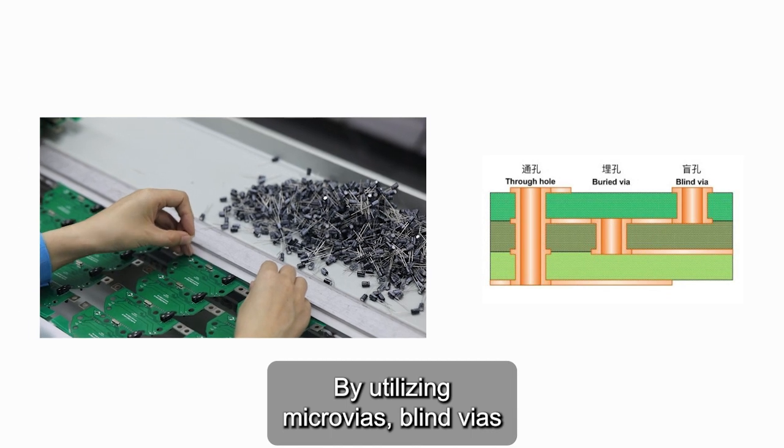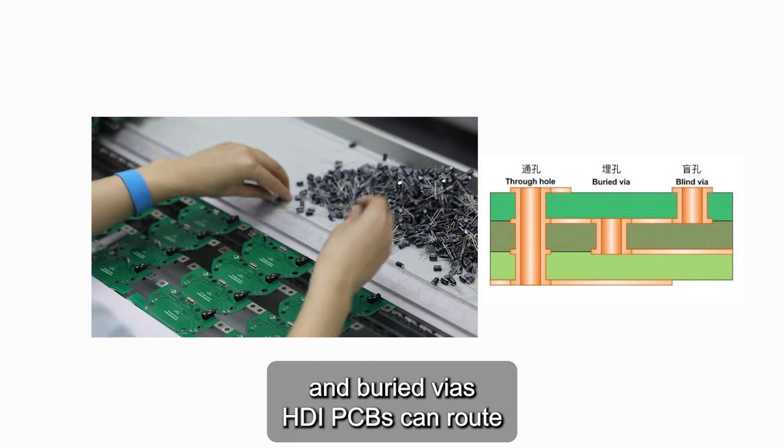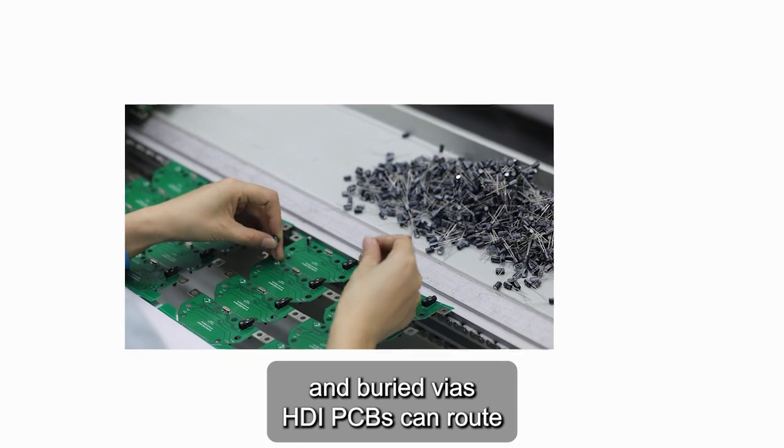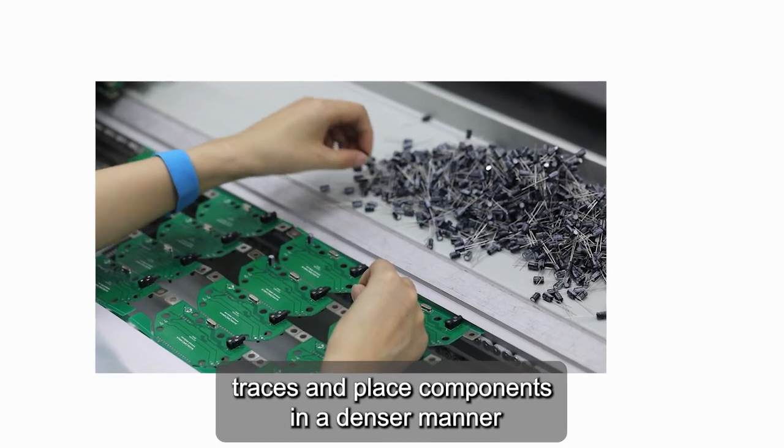By utilizing microvias, blind vias, and buried vias, HDI PCBs can route traces and place components in a denser manner, thereby reducing the overall footprint of the board.